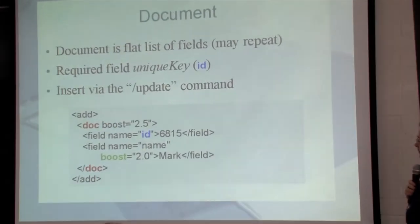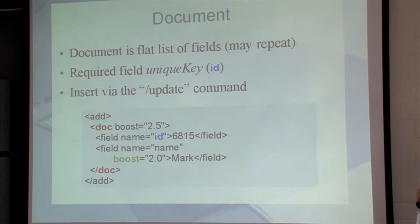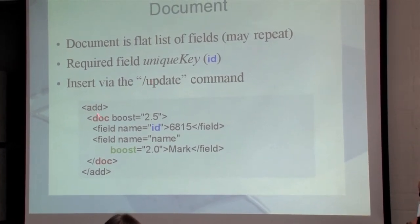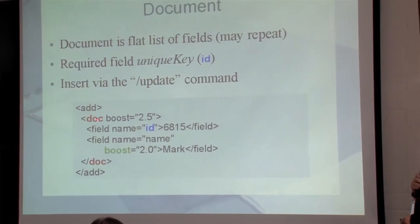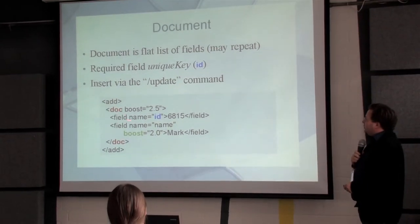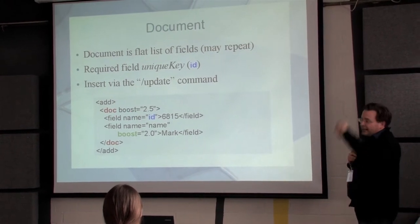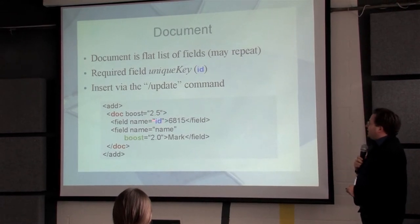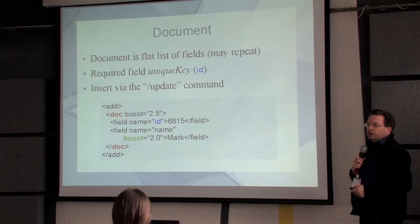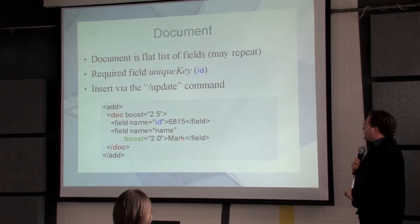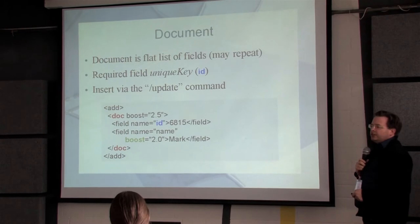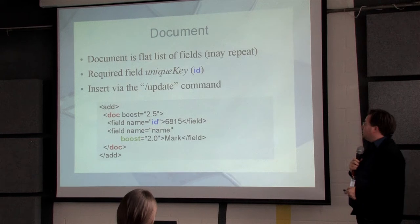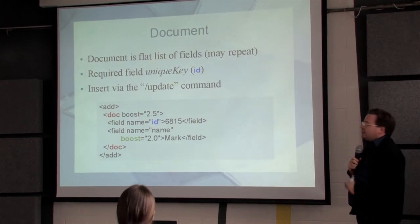Let me give you an example of how it works. This is the XML version of the data exchange — add, update, add. This is the body of the HTTP POST. You have the document and the field names. The document is a flat list of fields, and the fields have a name. One has the name 'id', which is just a unique key. You can also provide boost — that means these fields are more important. You can also do that for documents. That's all there is at the level of how a document is built.